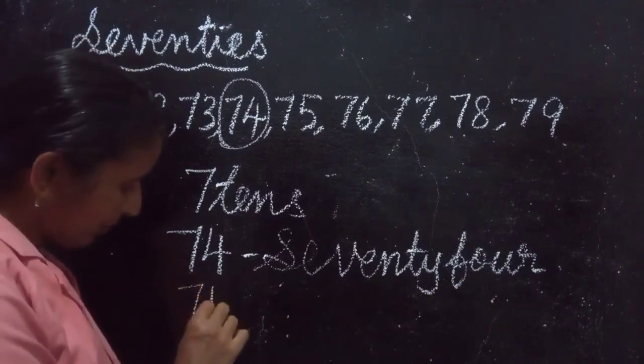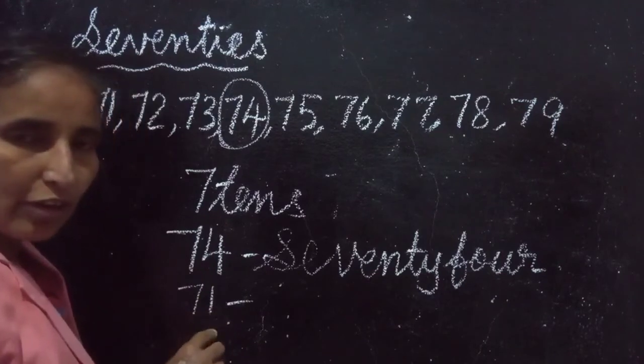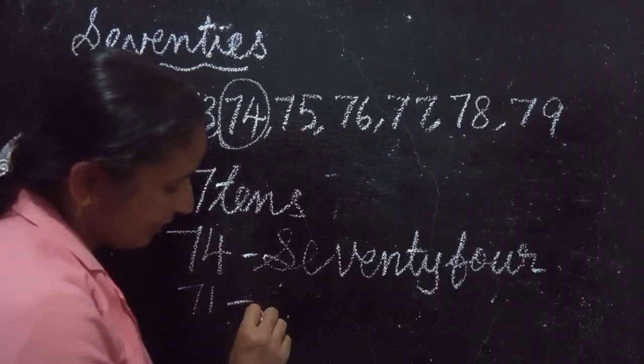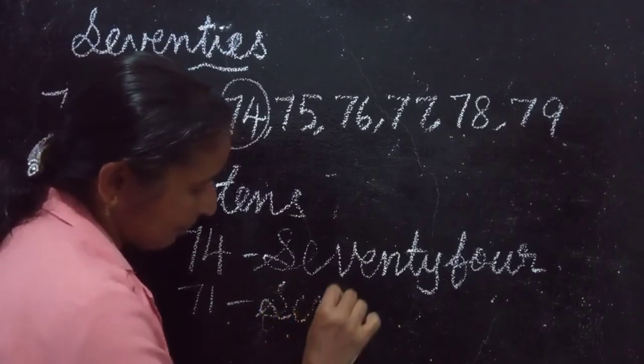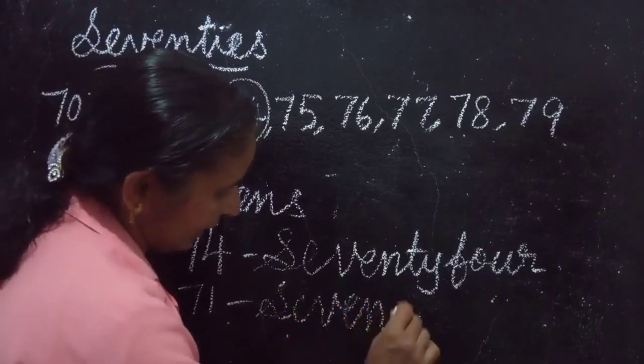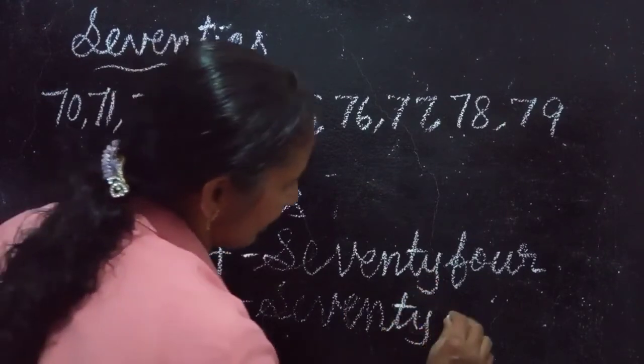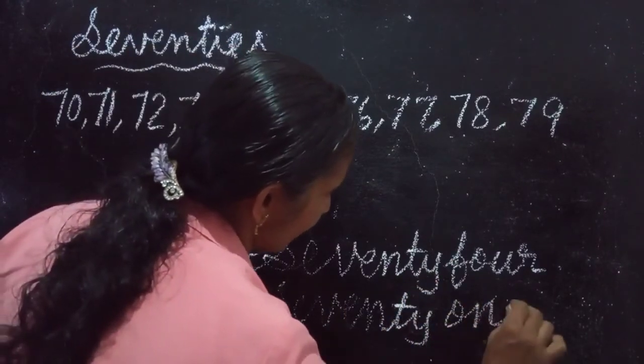One more number. What is this number is called? 71. How you write the number name? Seventy-one. S-E-V-E-N-T-Y 71. O-N-E 1.